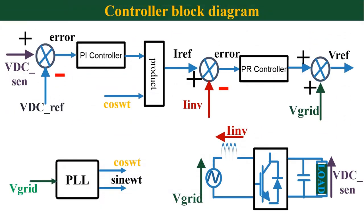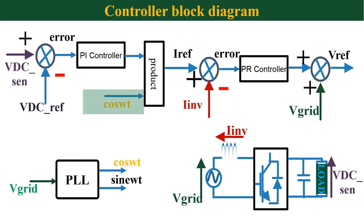This is the control block diagram of a single phase active rectifier. We need to sense three quantities at the inverter side: one is grid voltage, then the grid current, and finally the output DC voltage. First, we need to find the error between the actual output voltage and the reference voltage. This error is then fed to a PI controller. Output of PI controller is now multiplied with cos(ωt), which is the unit vector generated by PLL, aligned in phase with the grid voltage. So we multiply these two quantities and we get the current reference.